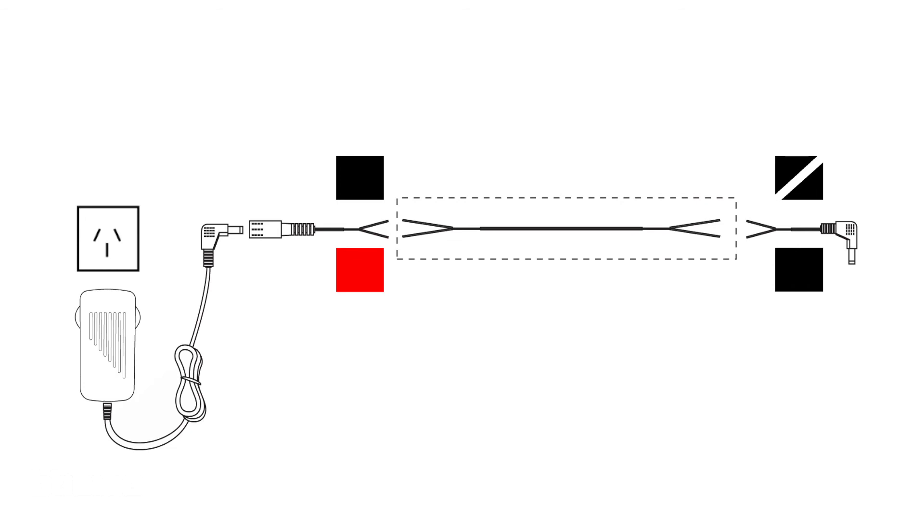You will need to weld two wire cable to the red and black wires from the female connector, and then weld the other side of the cable to the black and two colored black and white wires to the male connector.